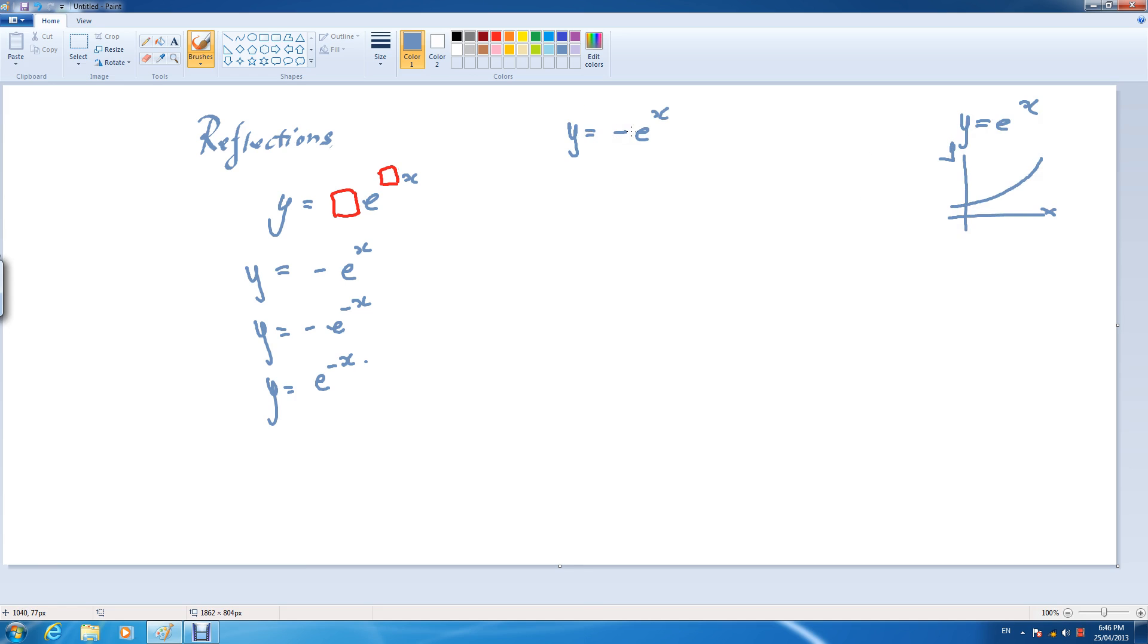So by placing a negative in front of the standard graph means that for every single positive y value, it becomes the equal but opposite y value. So what that means is that the data that was here, here, here, here will now become the negative versions.